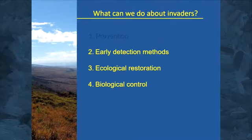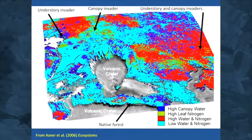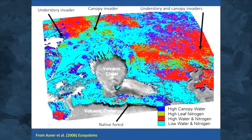Second, we can develop early detection methods, because we know even with good policies some species are going to slip through the cracks. One method I think is incredibly cool is the use of remote sensing to detect invasive species — this is definitely something you can do for plants.